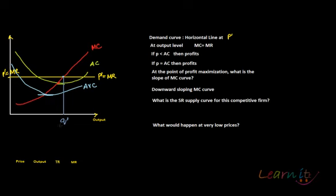At Q dash, profits are maximized. You have seen in profit maximization exercises that profits are maximized where marginal revenue equals marginal cost. But since this firm is a price taker, MR equals P, so we can write P equals MC. In the case of a competitive firm, the profit-maximizing condition becomes P equals MC, and the output level Q dash generates maximum profit.